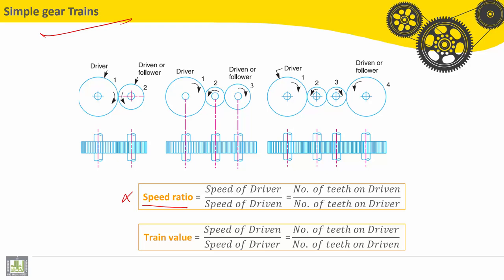So the speed ratio for Simple Gear Train is equal to the speed of the driver divided by the speed of the driven. It is also equal to the number of teeth on the driven divided by the number of teeth on the driver.